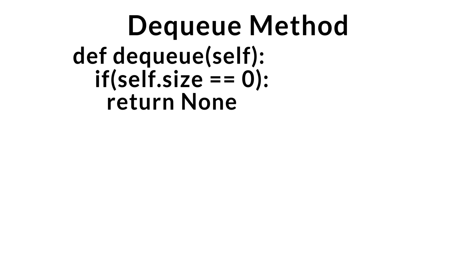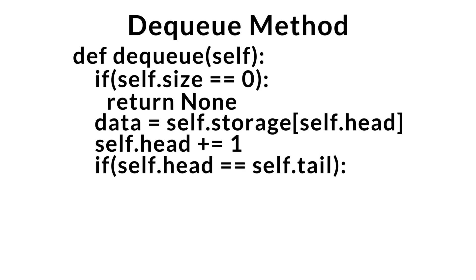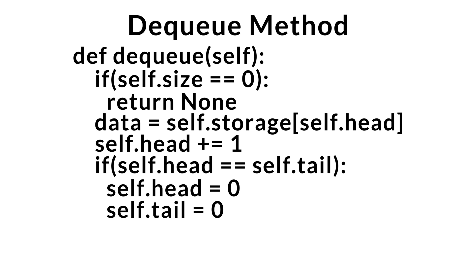Now let's move on to our DQ method. The DQ method's job is to remove and return the data from the front of the queue. First, we check if our queue is empty by seeing if size equals zero; if it is, we return none. If not, we save the data at the front of the queue — what's at the head. We then remove it by advancing our head index to the next position. We check if the head index equals the tail index; if so, we can reset both to zero for memory management. We decrement the size and finally return the data.